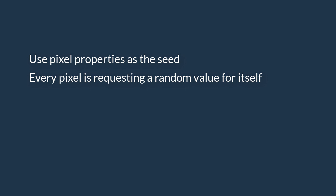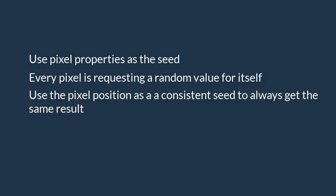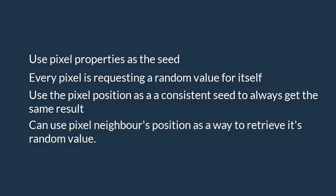Or get the values of their neighbors. We can provide something that is a consistent property of the pixel, such as its world position, and feed that into the generator, and always get the same result. A pixel can then also ask the generator for the value of the position next to it, by offsetting its own position slightly, and getting the right answer every time.